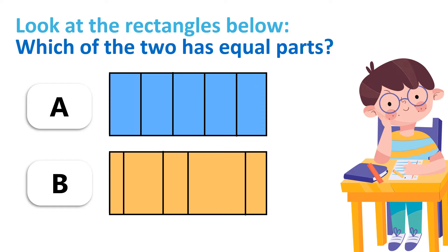Now look at the rectangles below. We have rectangle A, which is the blue one, and rectangle B, which is the orange one. Which of the two has equal parts? It's clearly rectangle A.